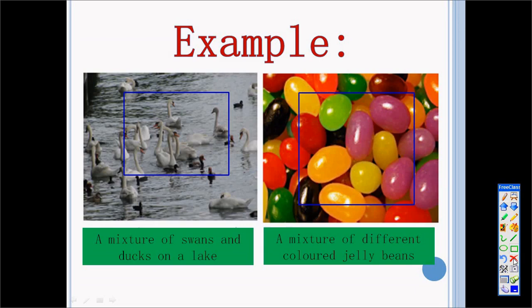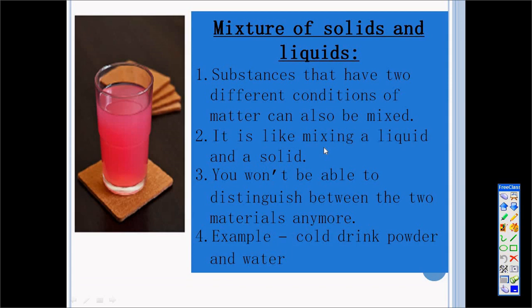So the next example of a mixture is where I mix a solid with a liquid. Now in this mixture, you will see that it is two different kinds of materials with different conditions. And when I'm talking about the conditions, I'm referring to the phases of matter. So solids, liquids and gases. So a solid and a liquid mixed together.